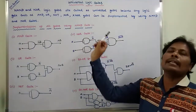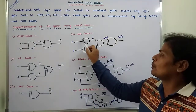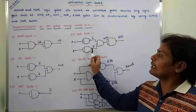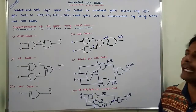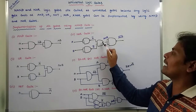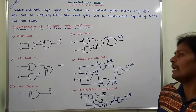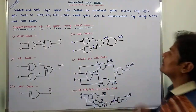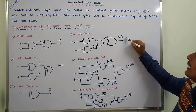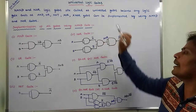Next one, NOR gate. So input A can be applied to the NAND gate, then we are getting A bar. Similarly for input B, we are getting B bar. So again, this output and this output can be applied to the NAND gate, then we are getting A plus B. After that, this output can be again applied to the NAND gate, then we are getting A plus B whole bar. So this is the output of the NOR gate.